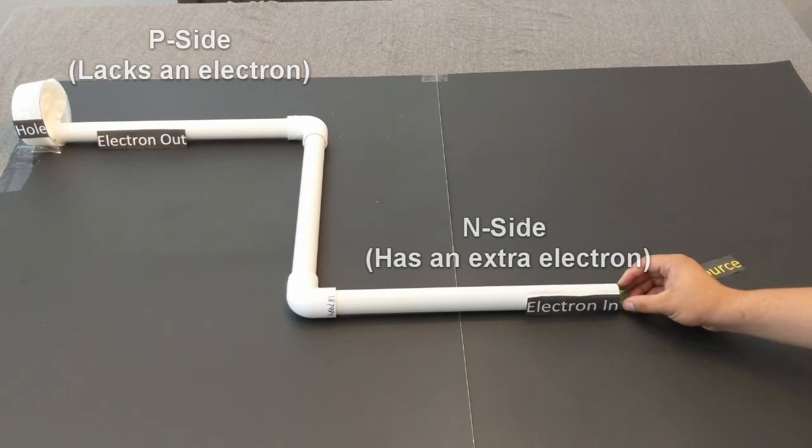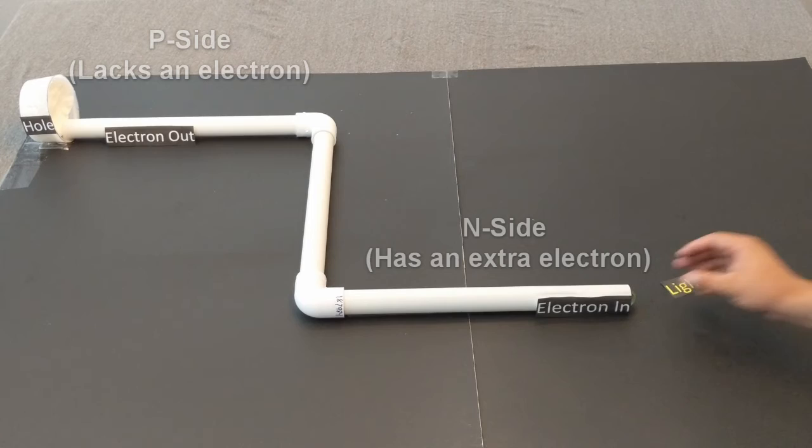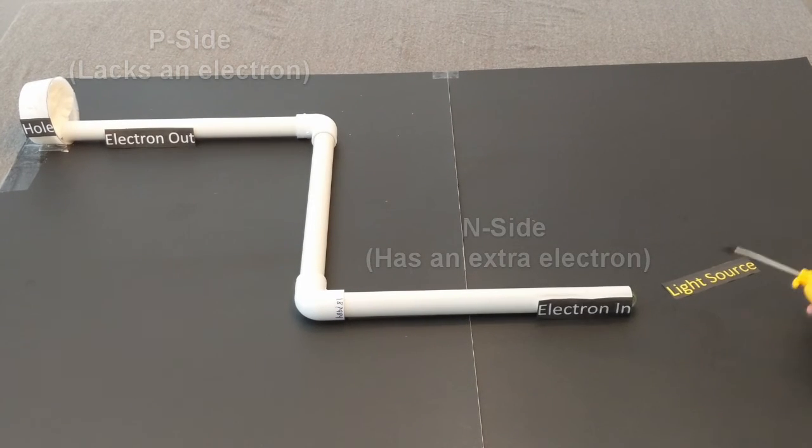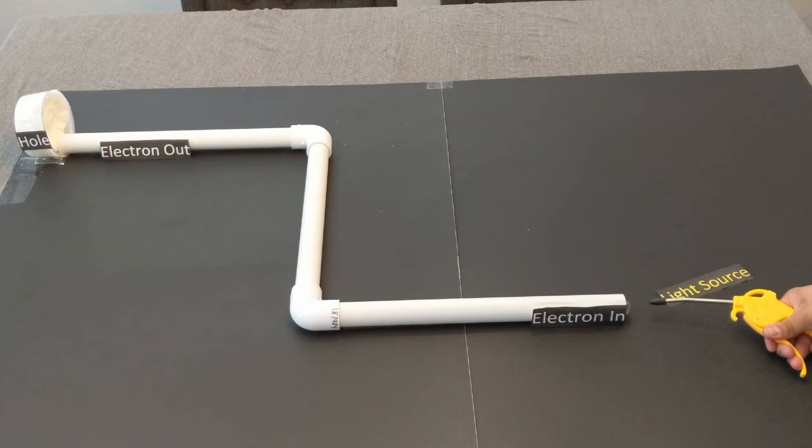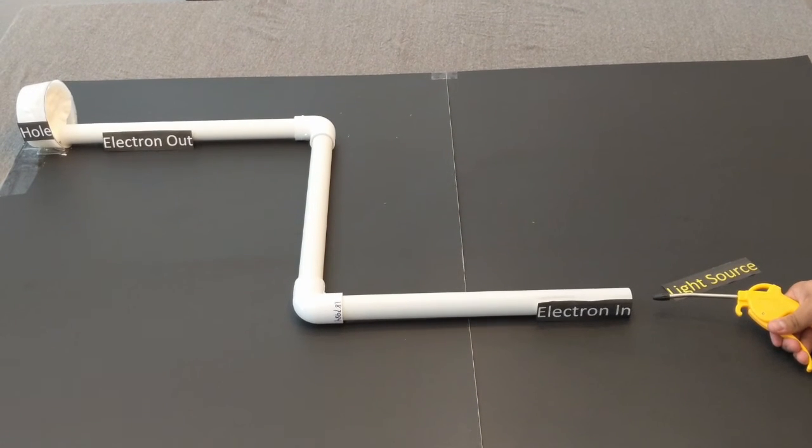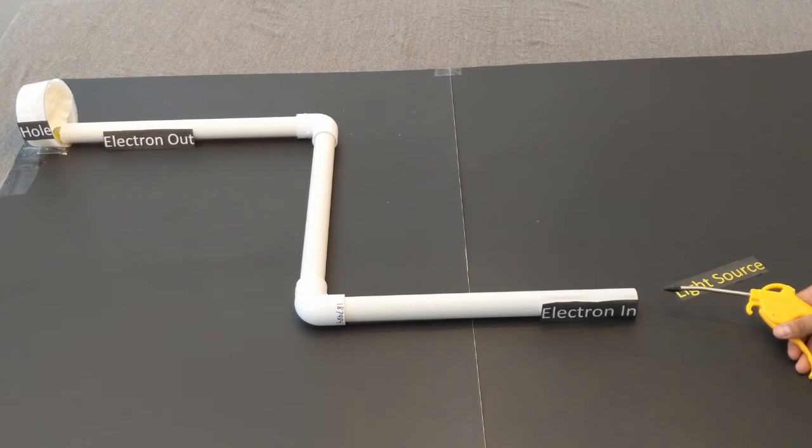On the right side, we have our n-side, which has an extra electron. On the left, we have our p-side, which lacks an electron. As our light source comes in, it gives our electron enough energy to pair with the hole. This results in energy.